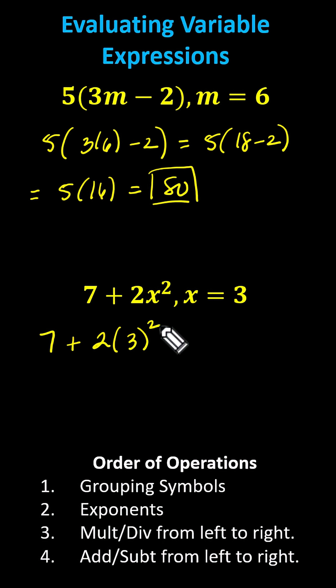Following the order of operations, the first step is to simplify three squared, which is three times three, or nine. The expression simplifies to seven plus two times nine. Again, we always multiply and divide before we add and subtract.